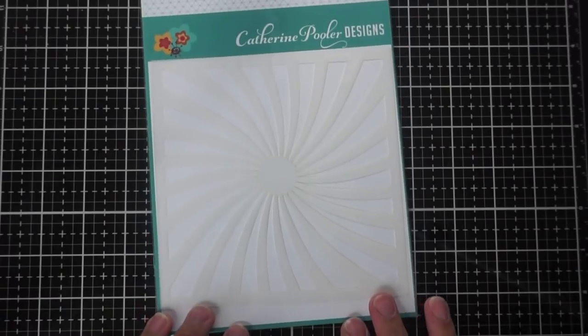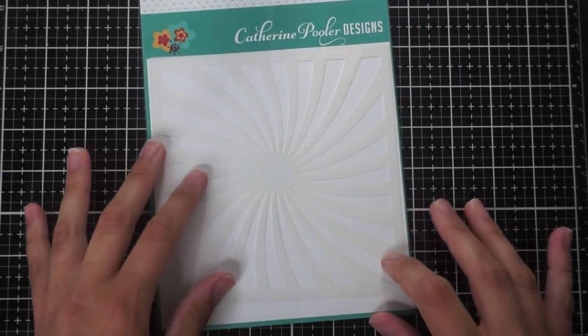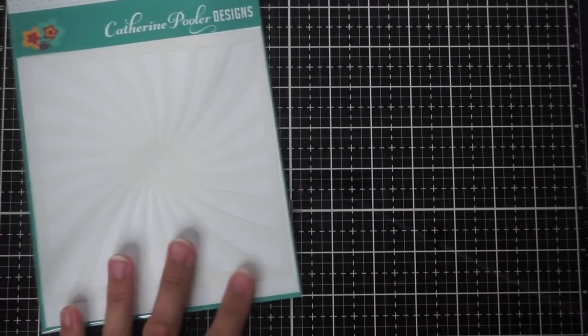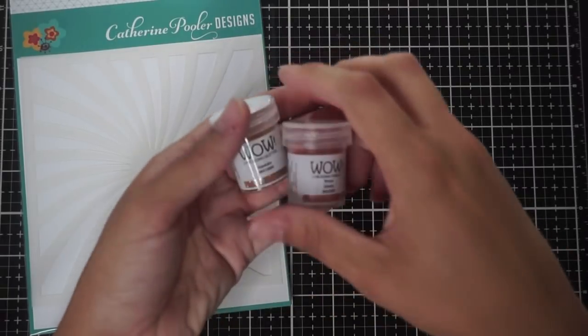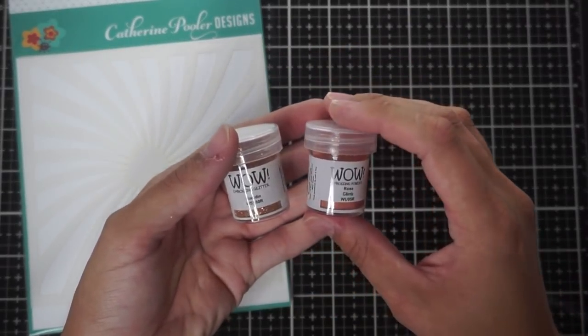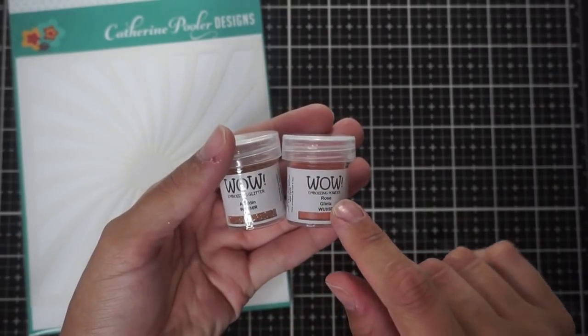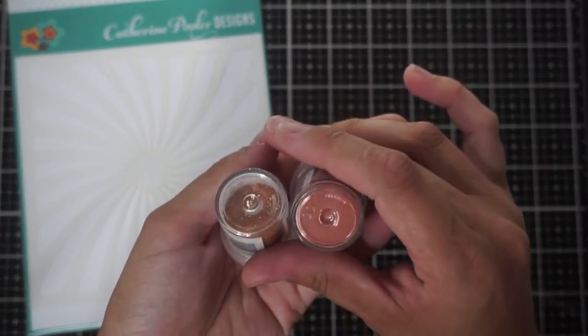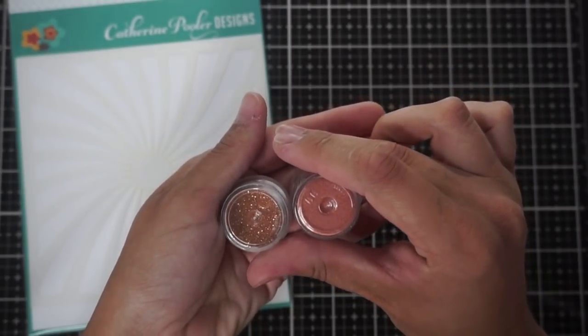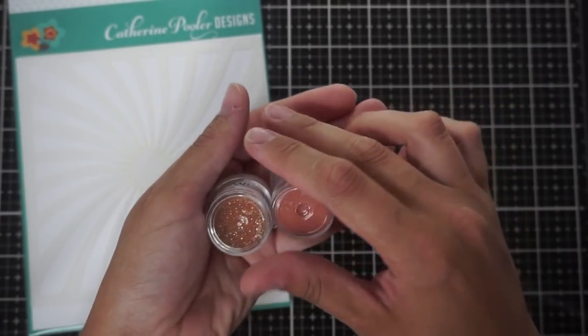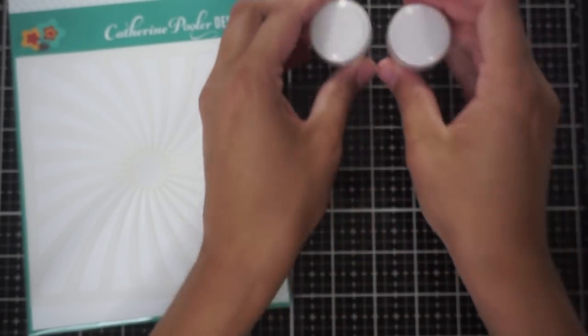I am so excited to be a part of the WOW Embossing Powder and Kathryn Pooler Blog Hop. So today for the video I'm going to be using a combination of Kathryn Pooler's newest release and some WOW Embossing Powders. You'll see here on the left I'll be using this really sparkly one called Aladdin and the one on the right which is that rose gold color is called Rose Glintz.